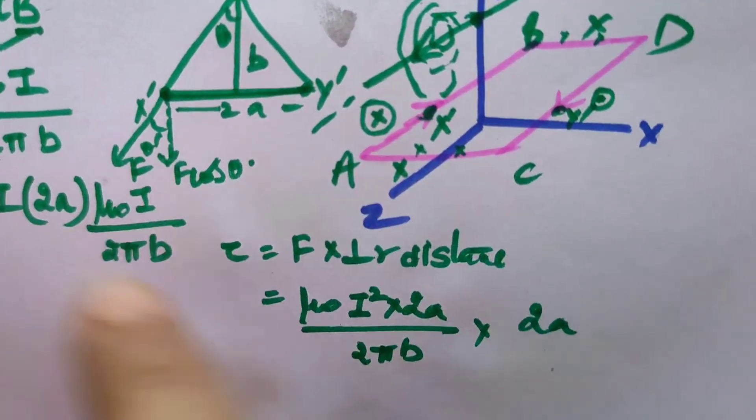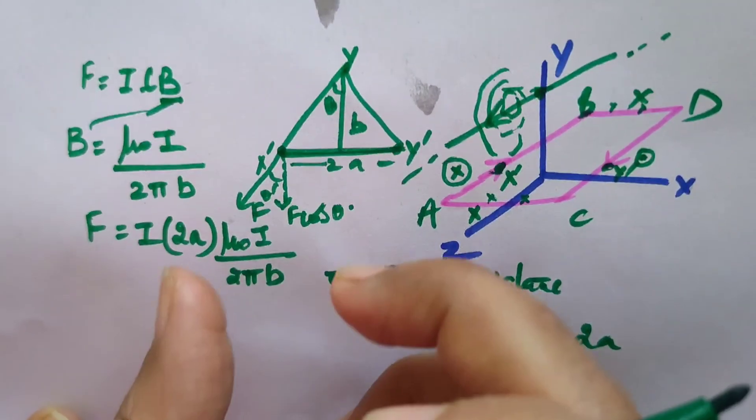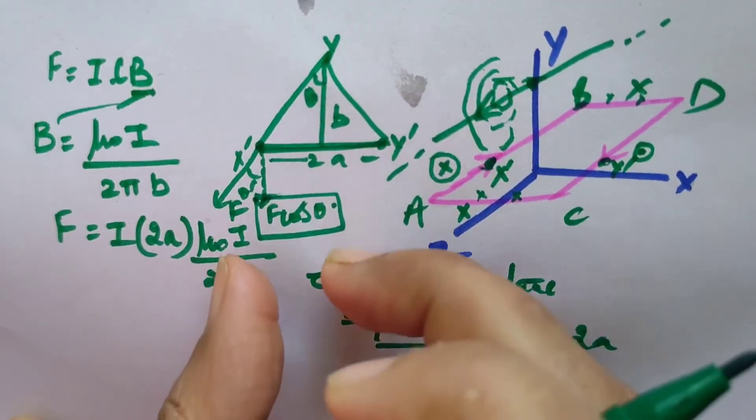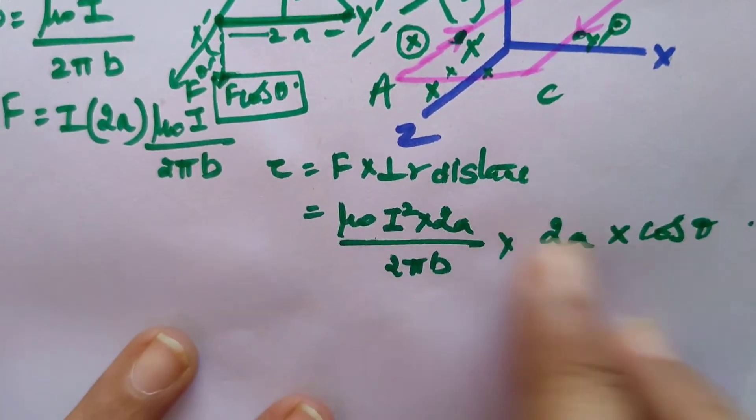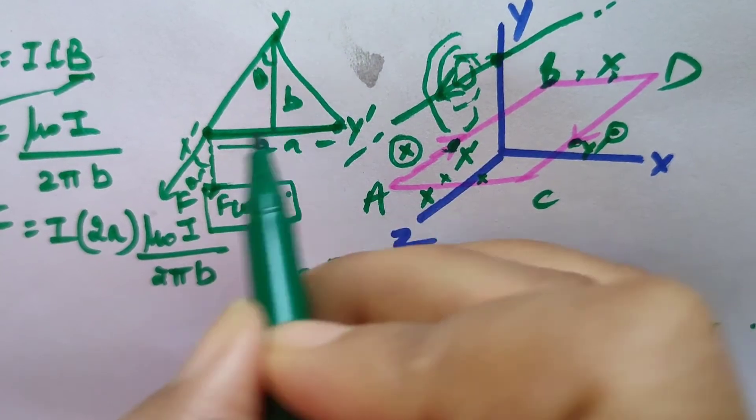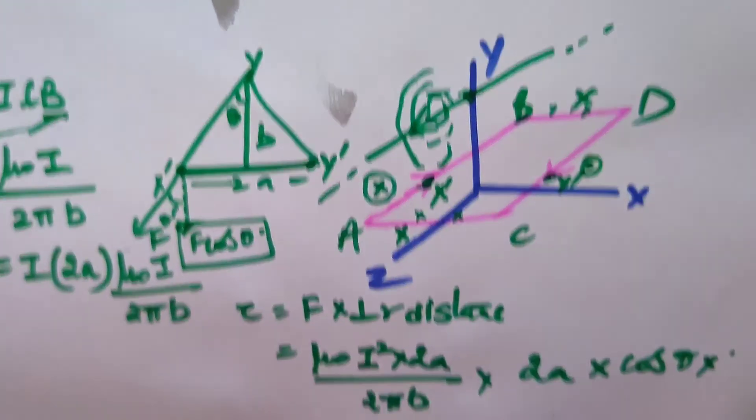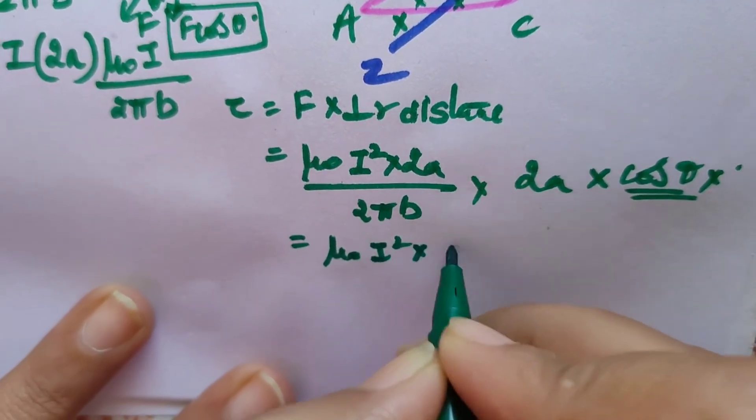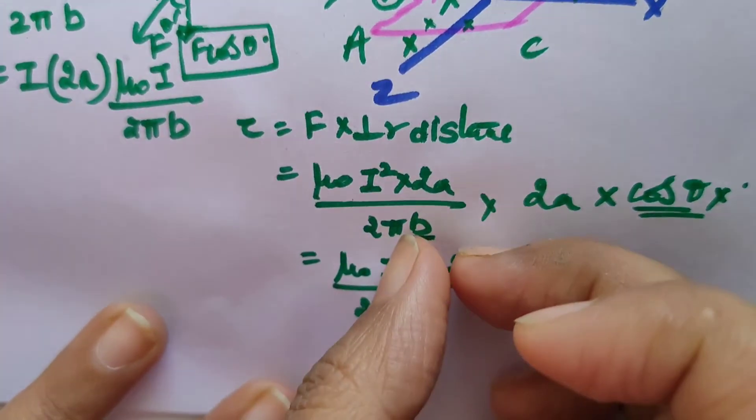But here is the point: you cannot use F directly. You have to find out the component of force which is perpendicular to this distance. That is, we are going to use the equation F cos θ. So you have to multiply with cos θ component. For this triangle, F cos θ is base upon hypotenuse. We have to replace cos θ with μ₀I² × 2a/(2πb).